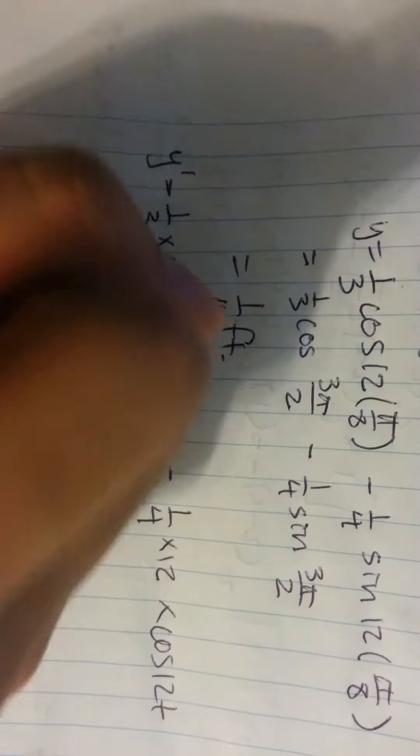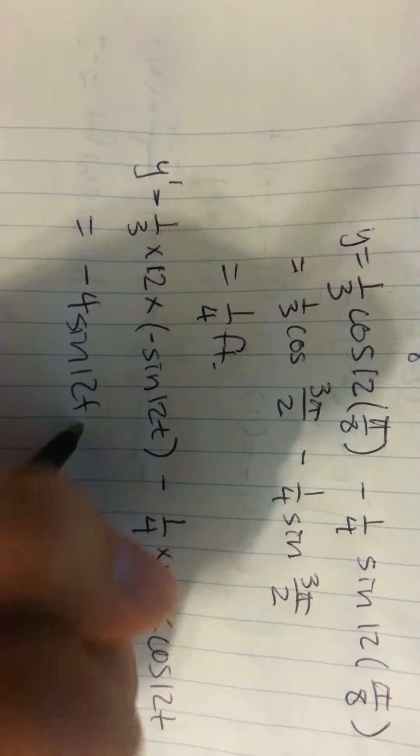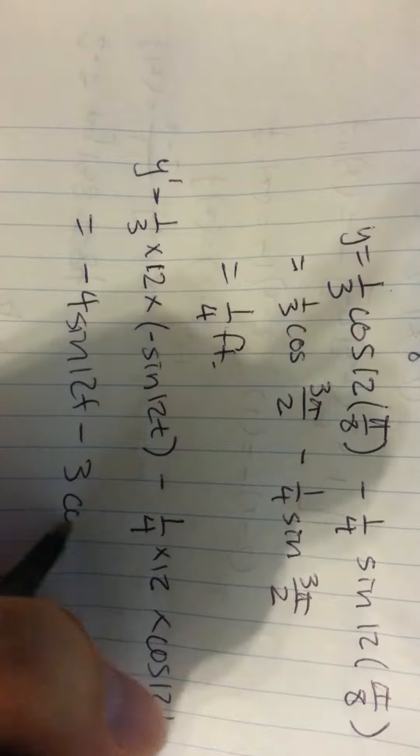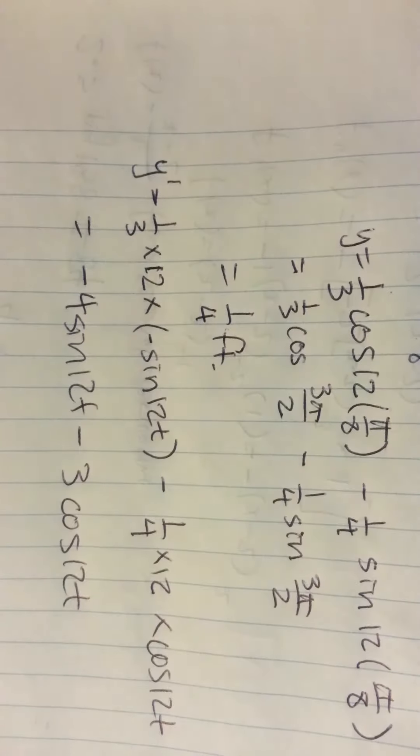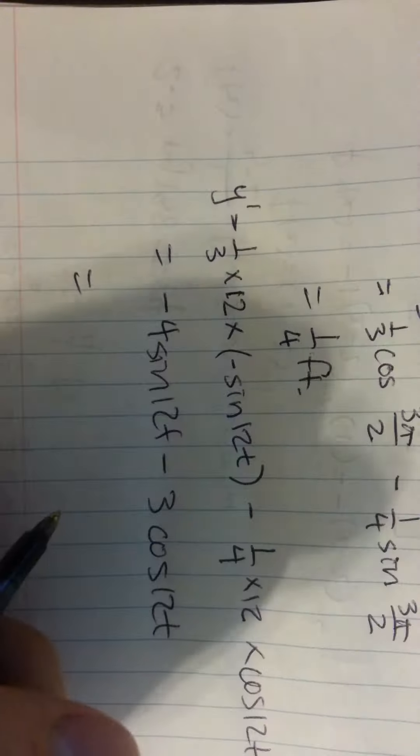Now you just simplify: negative 4 sine 12t minus 3 cosine 12t, which equals when you